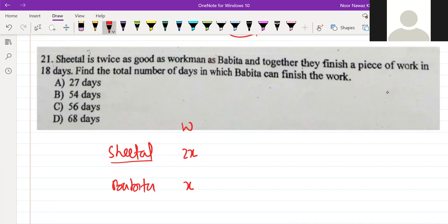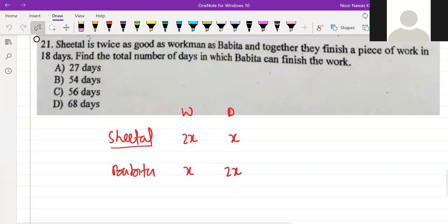I told you about days or time. If Shital works for a day, it will take Babita 2 days. Work ratio, day ratio is 2:1. What has been given? Together, Shital plus Babita works in 18 days.